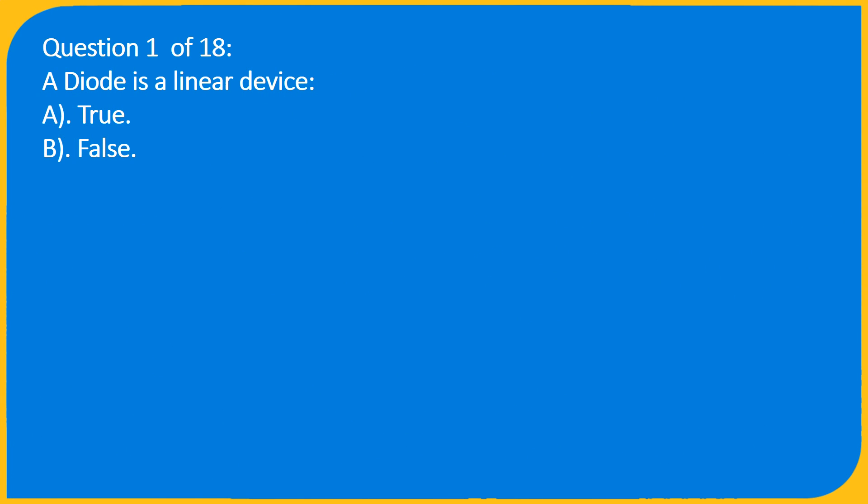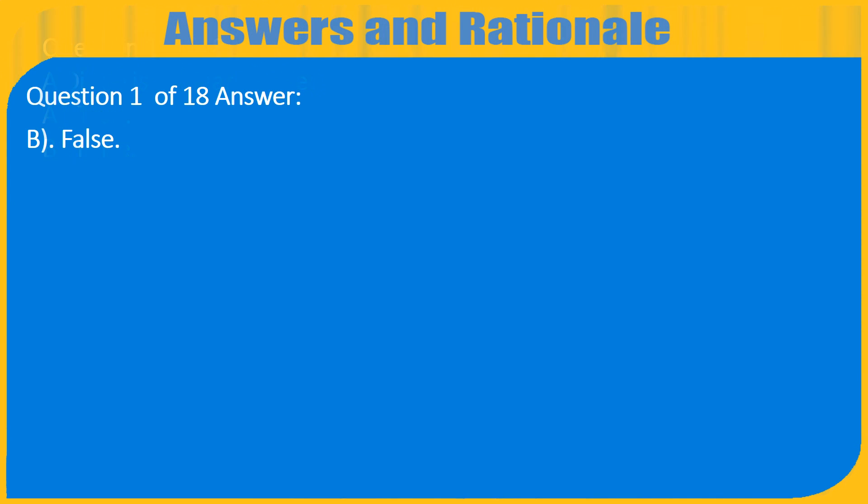Question 1 of 18: A diode is a linear device. A. True, B. False. Question 1 of 18 Answer: B. False.